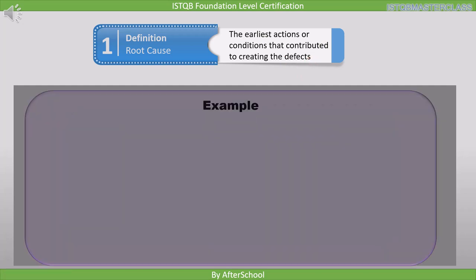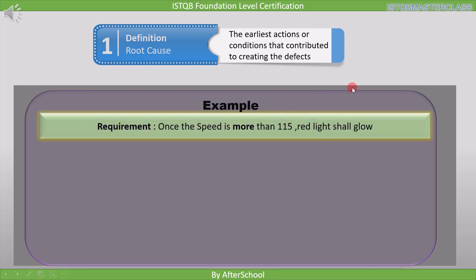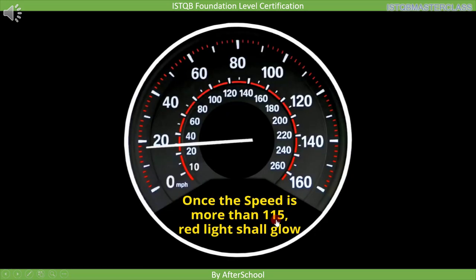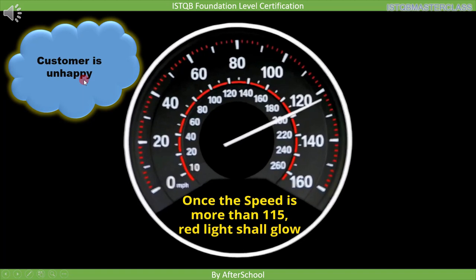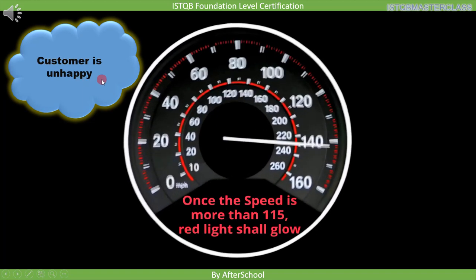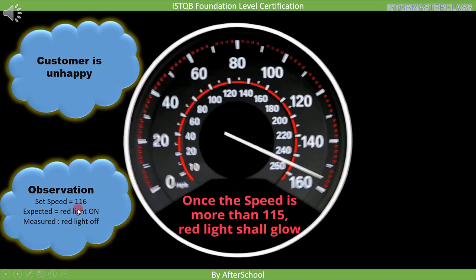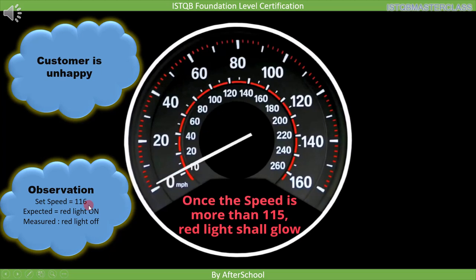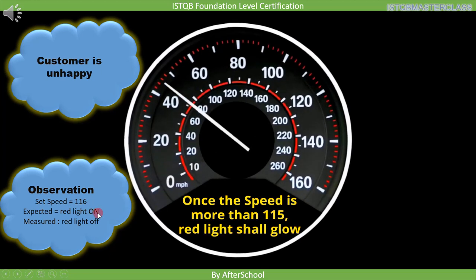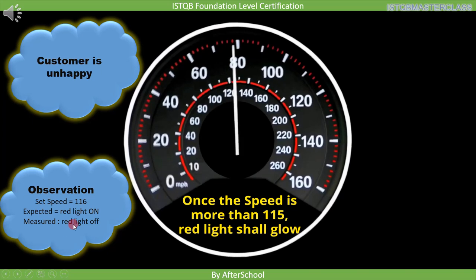Here we have an example to help us understand this. Say we get this requirement: once the speed is more than 150 km per hour, the red light shall glow. After getting this feature, the customer is unhappy because he checked the device and observed a defect. When he set the speed to 116, he expected the red light to be on, but found that it's still off.